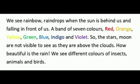We see a rainbow when the sun is behind us and rain is falling in front of us — a band of seven colors: red, orange, yellow, green, blue, indigo, and violet. The stars and moon are not visible as they are above the clouds. How beautiful is the rain! We see different colors of insects, animals, and birds.